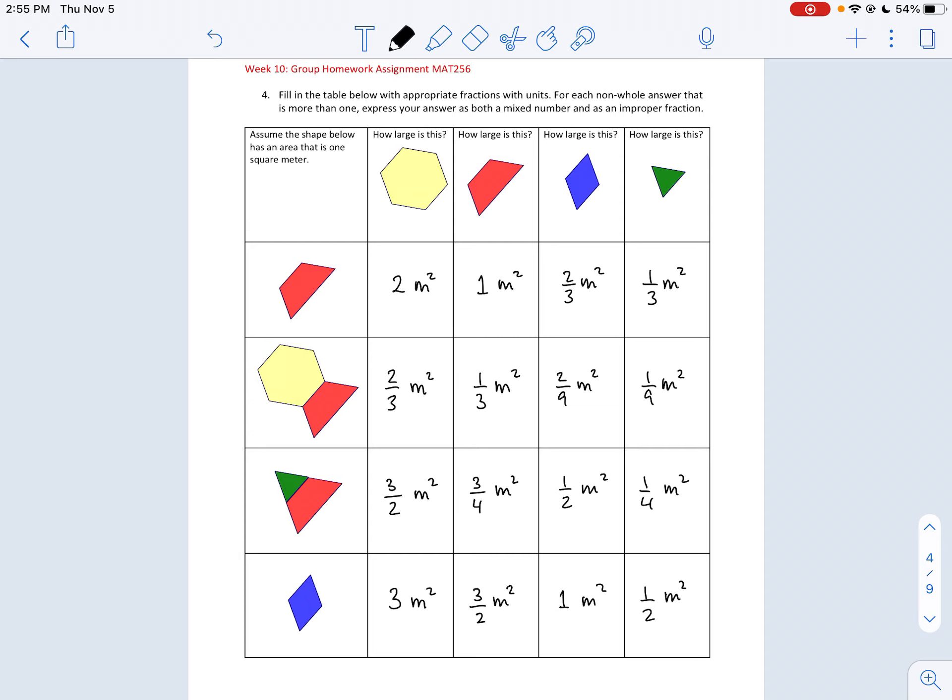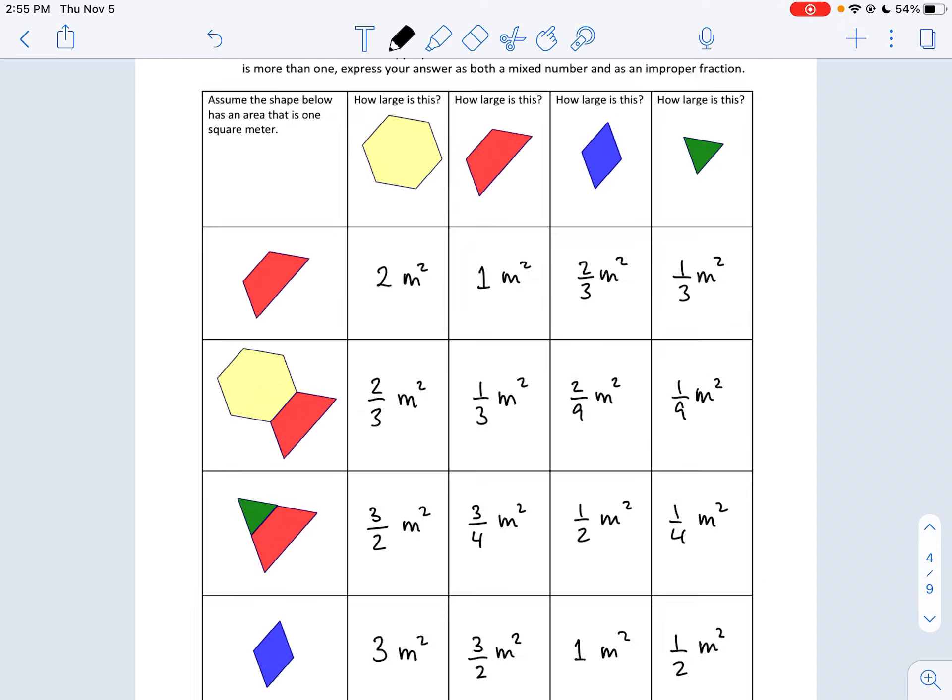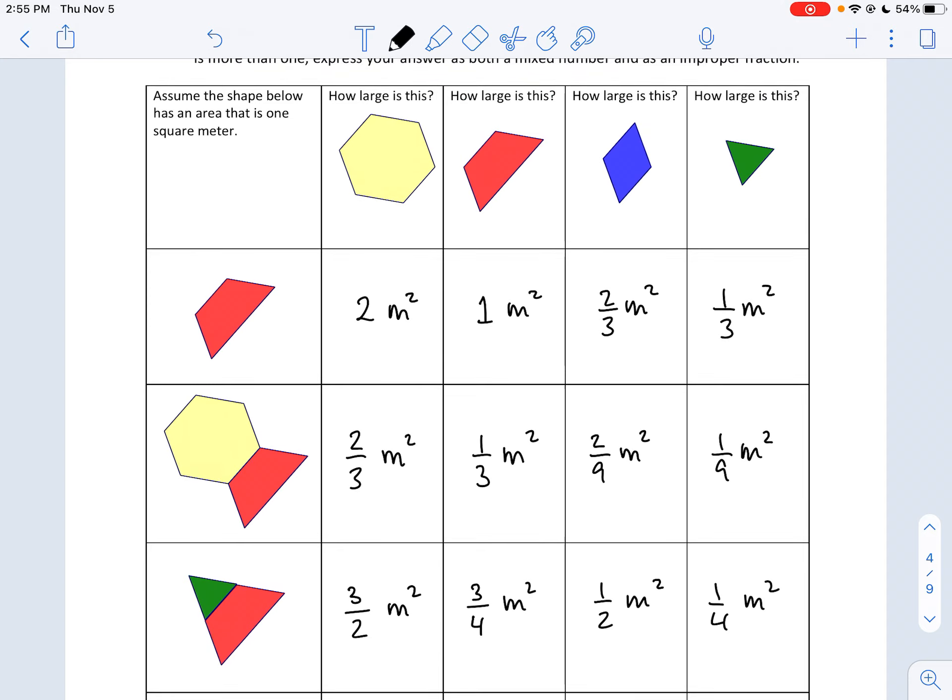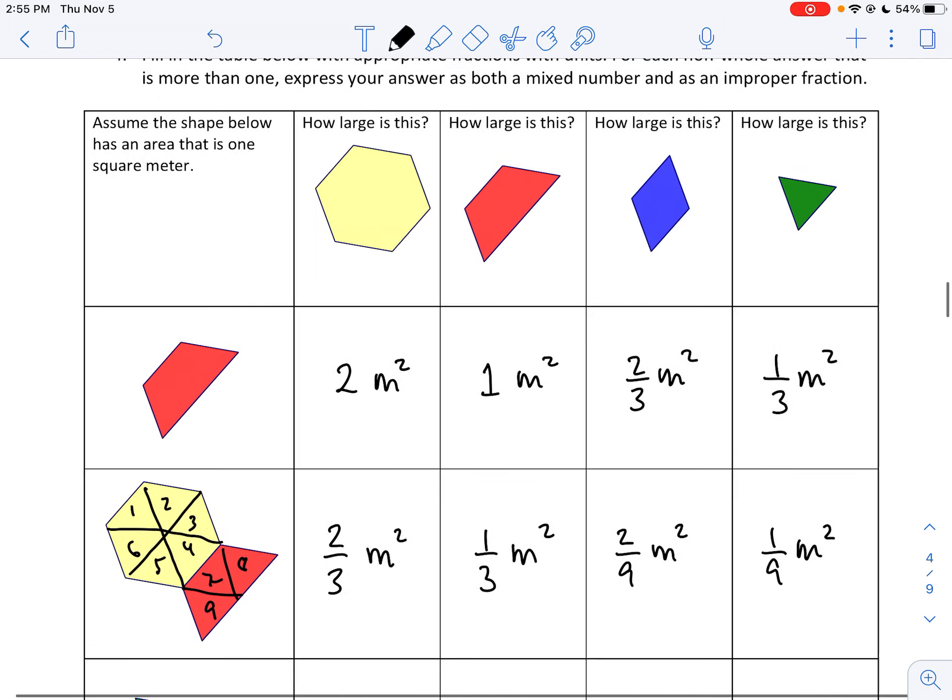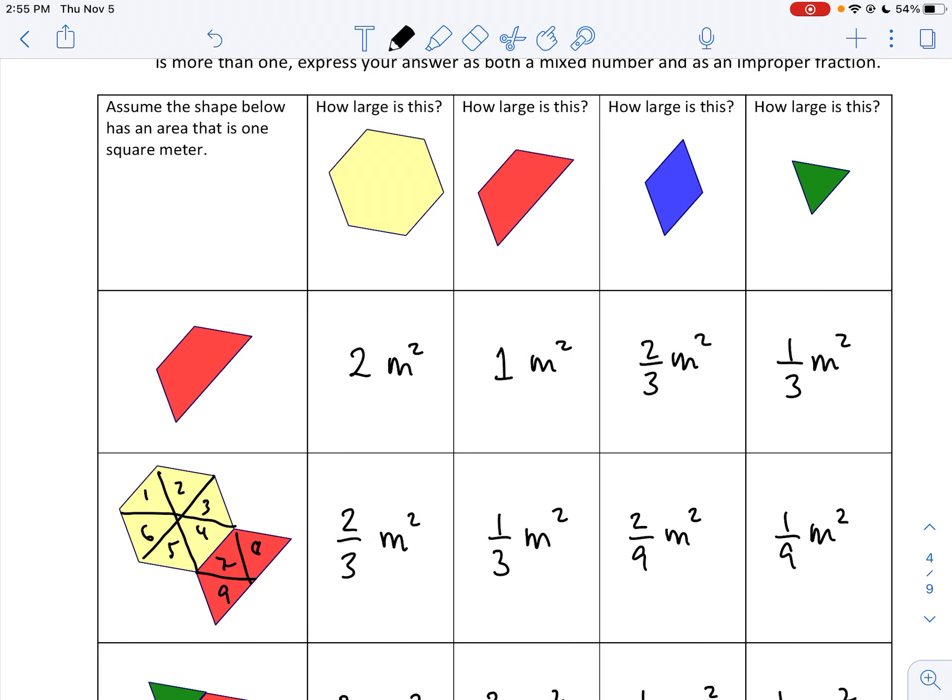On this one here there were a few groups that made some mistakes. Let's do the second row here. So we have one way to do this is to think of everything in terms of those triangles. So it's possible to see that we have one, two, three, four, five, six, seven, eight, nine of the triangles and this shape.